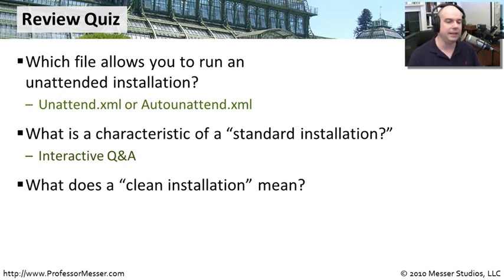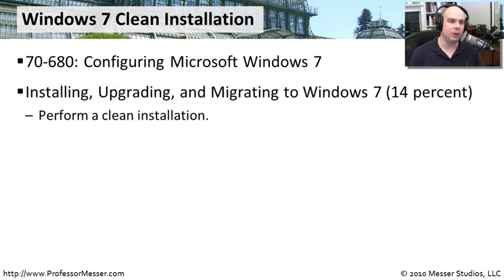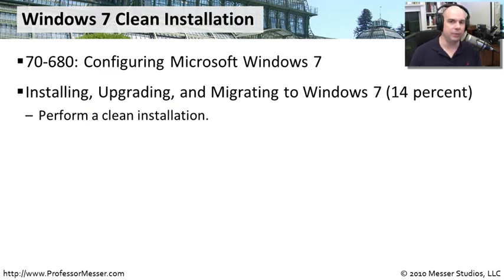And lastly, what does a clean installation mean? Exactly what we did in this scenario — nothing was on the hard drive, nothing was partitioned, there was no existing operating system to upgrade, migrate, or dual boot to. That covers our requirements from this module on the 70-680 exam for configuring Windows 7. We've done a clean installation, and we can now build on it to create auto unattend capabilities and automate Windows 7 deployment.